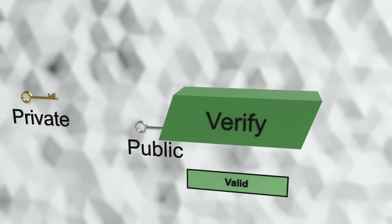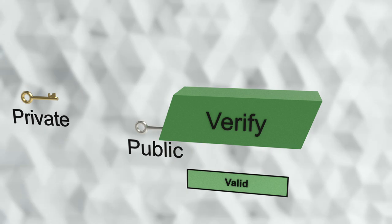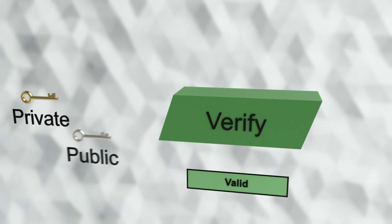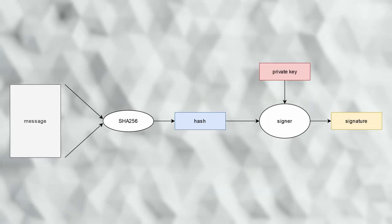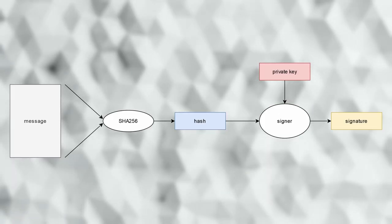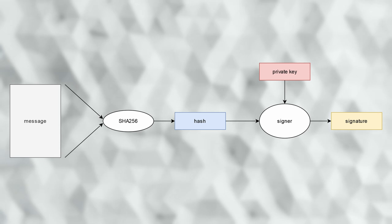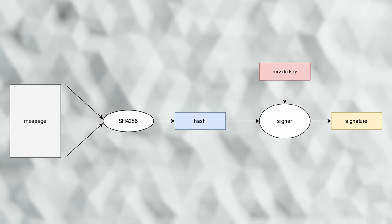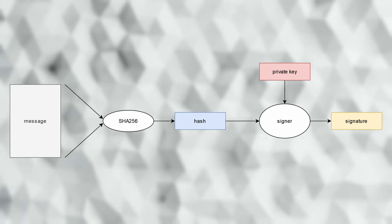Most digital signature algorithms work with only a small amount of data, and it is appropriate to use the output of the hash function as this message. To see this whole process, we take the image we want to sign and run it through the digital hash function. This hash output is then given along with a private key to the sign operation, which produces the digital signature.